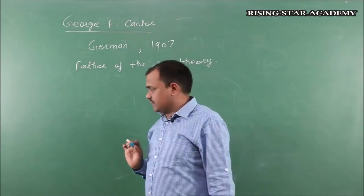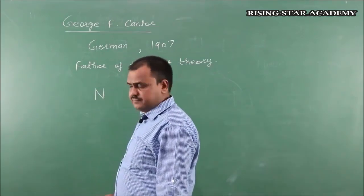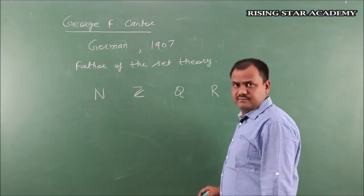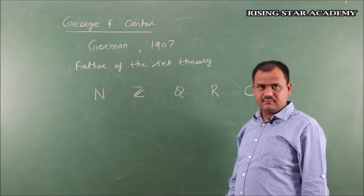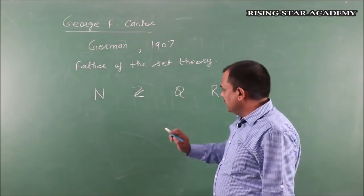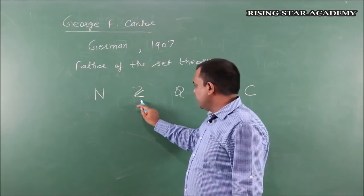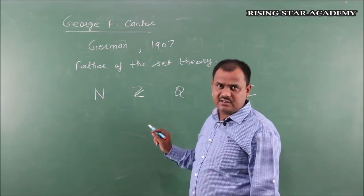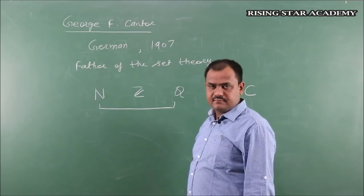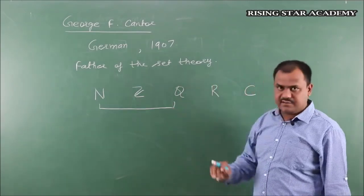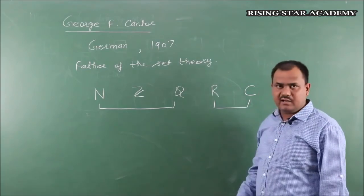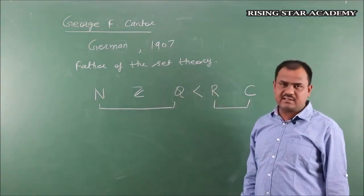What did Cantor propose? This is the set of natural numbers N, set of integers Z, set of rationals Q, set of all real numbers R, and set of all complex numbers C. Around 1907, Cantor proposed that the set of natural numbers, set of integers, and set of rational numbers all have the same number of elements. And the number of elements in R and C is greater than these, though R and C also have the same number of elements as each other.